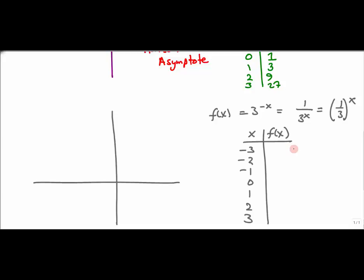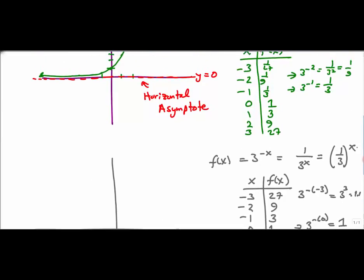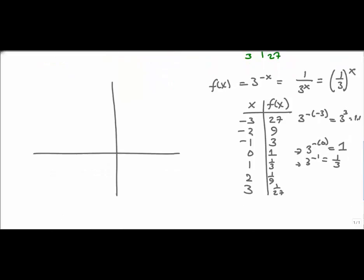Basically everything flips opposite. At x = -3, I have 3^(-(-3)) = 3^3 = 27. At x = -2, it's 9. At x = 0, it's still 1 — that important hinge point. At x = 1, I get 3^(-1) = 1/3. At x = 2, it's 1/9, and at x = 3, it's 1/27. Everything is swapped from the growth function.